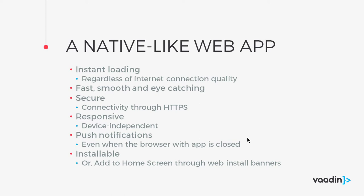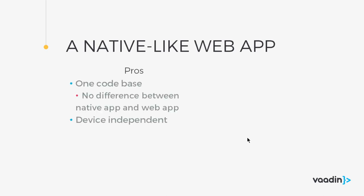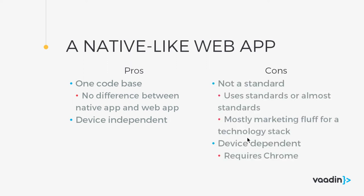There are pros and cons. The biggest advantage is one code base — it's a web application, so regardless of the device your users have, you have one code to maintain, and it's at least in theory device independent. Also, if your service requires a native app, you no longer need to ship one separately, because a progressive web app is almost like a native app for the user.